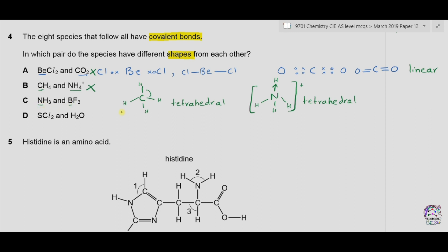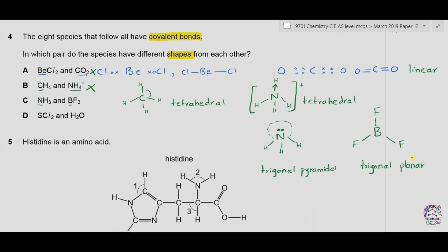Option C is NH3 and BF3. In NH3, nitrogen makes three single covalent bonds and has one lone pair. The lone pair occupies significant space, making the structure trigonal pyramidal. In BF3, boron has only three electrons in the outermost shell and makes three covalent bonds with no lone pair present, giving a trigonal planar structure. So in option C, both species have different shapes — this could be the correct answer.